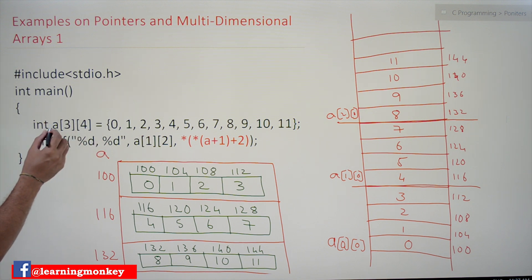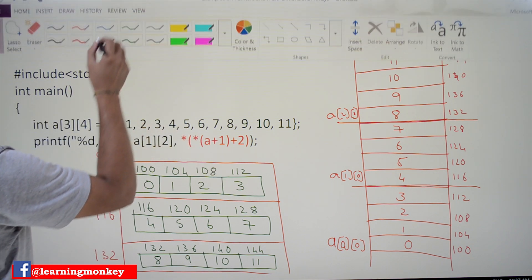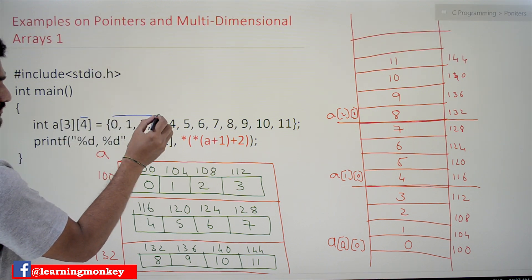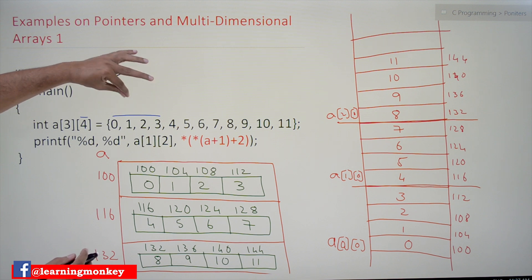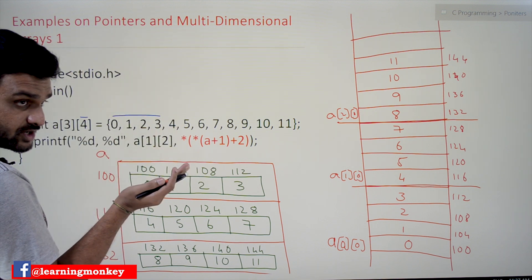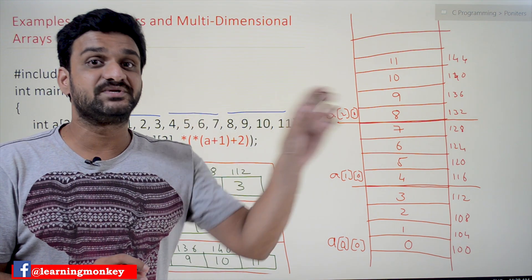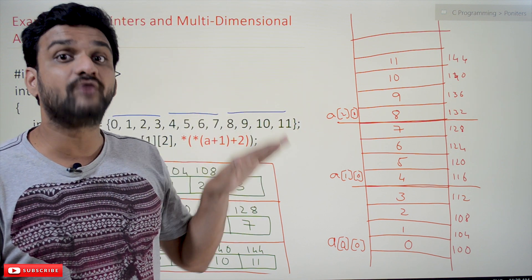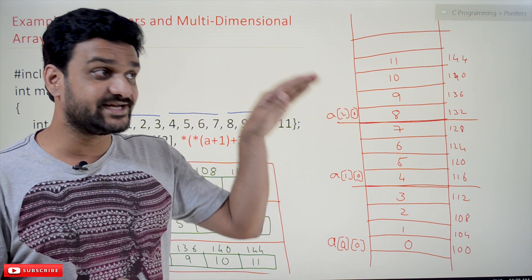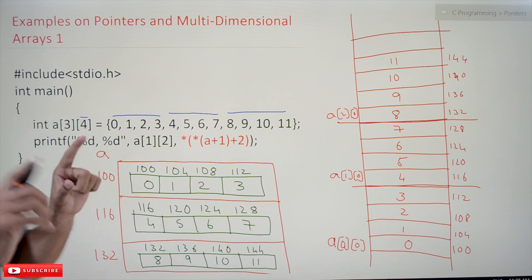The example we have taken is a two-dimensional array a[3][4], meaning 3 rows and 4 columns. The elements get distributed based on the number of columns — 4 values go into the 1st row, the next 4 into the 2nd row, and the next 4 into the 3rd row. By the definition of multi-dimensional array discussed previously, a multi-dimensional array is an array of arrays, and this definition helps you a lot.